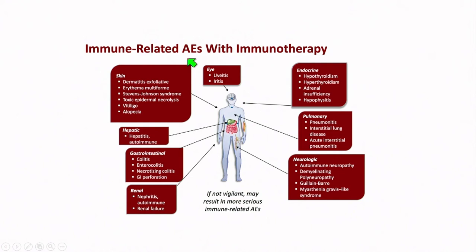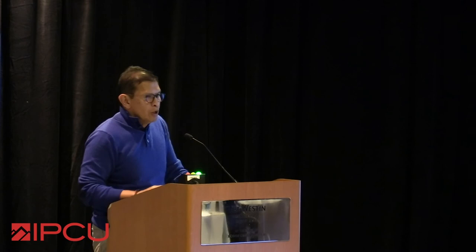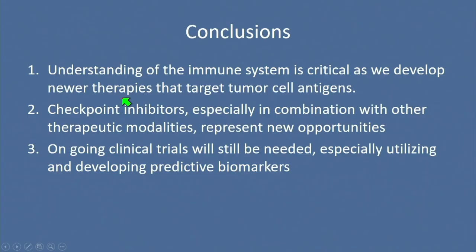There are immune-related adverse events with immunotherapy — including dermatitis, ophthalmologic, and endocrine reactions — and as these expand rapidly with approvals across bladder cancer and other areas, urologists moving these into practice need to be aware of side effect profiles. In conclusion, understanding the immune system is critical as we develop newer therapies targeting tumor cell antigens. Checkpoint inhibitors, especially in combination with other modalities, represent new opportunities. Ongoing clinical trials will still be needed, particularly to develop predictive biomarkers.